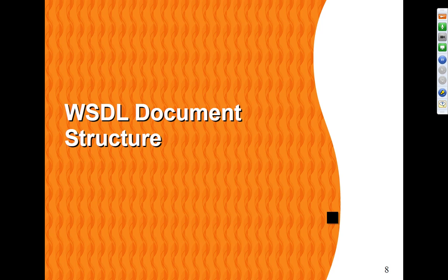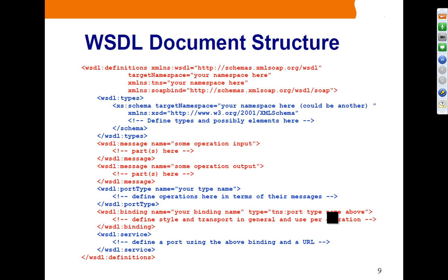Let's look at the WSDL document structure. This is the complete WSDL document structure. We have defined the WSDL namespace and the prefix is WSDL. We use the WSDL prefix for all elements defined in the WSDL namespace: definitions, types, message, port type, binding, and service. There is also a target namespace and two source namespaces: TNS and SOAP bind.